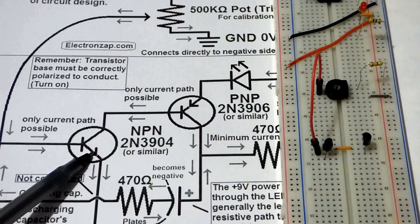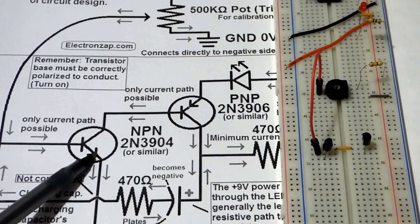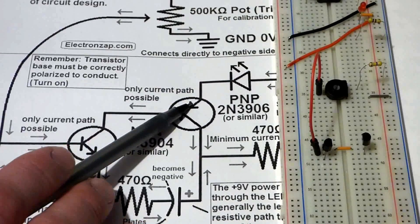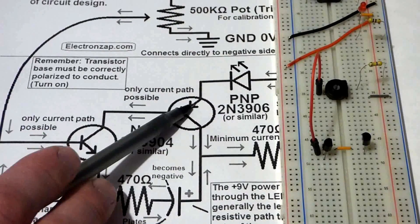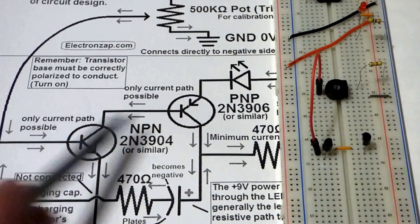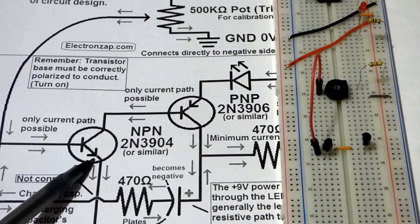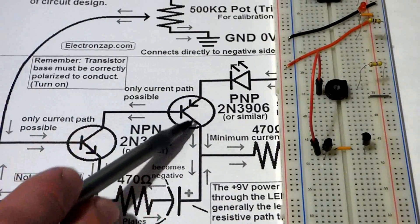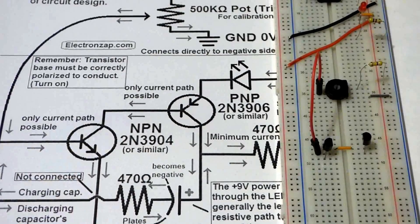When you're looking at them directly, the pin layouts are the same, so the NPN is facing one way and the PNP is facing another way.